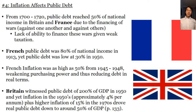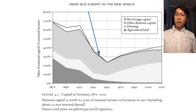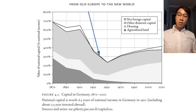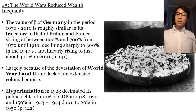Britain witnessed public debt of 200% of GDP in 1950, and yet inflation in the 1950s of approximately 4% per annum plus higher inflation of 15% drove real public debt down to around 50% of GDP. What tends to cause inflation and public debt? Wars. The world wars reduced wealth inequalities — the fifth claim Piketty makes in his book. The value of beta in Germany from 1870 to 2010 is roughly similar in trajectory to Britain and France, sitting at 600 to 700% from 1870 to 1910, but declined sharply to 300% in the 1940s, and linearly rising to just about 400% in 2010. Hyperinflation rose in 1923 in Germany, decimating its public debt of 100% of GDP down to 20% in 1950.